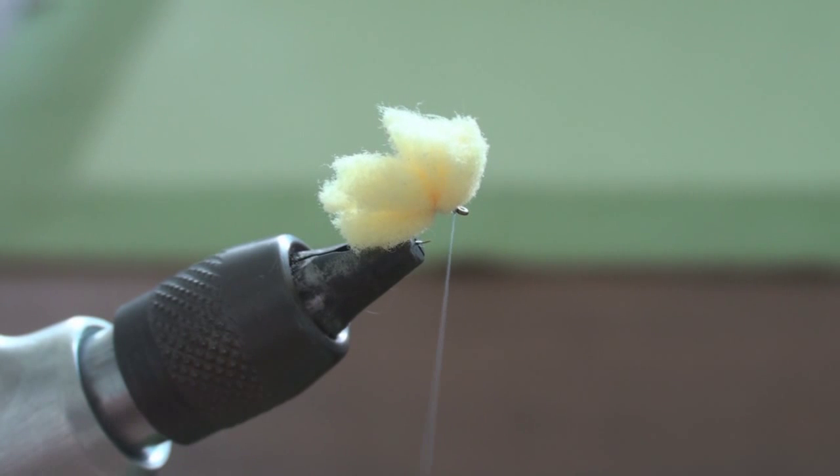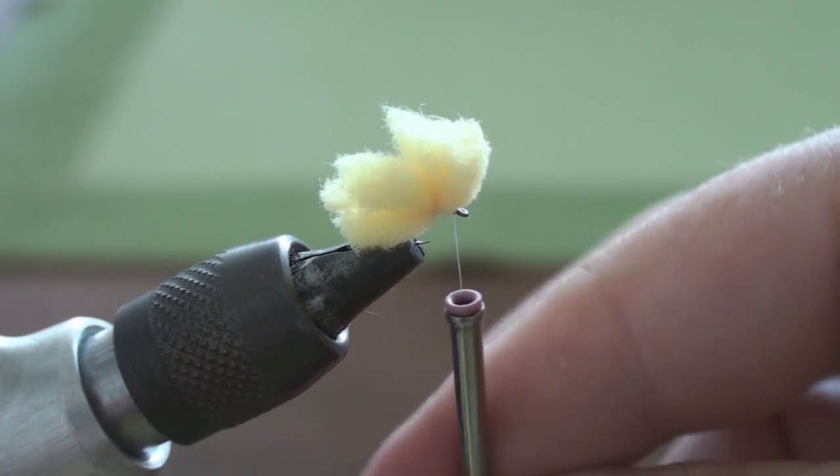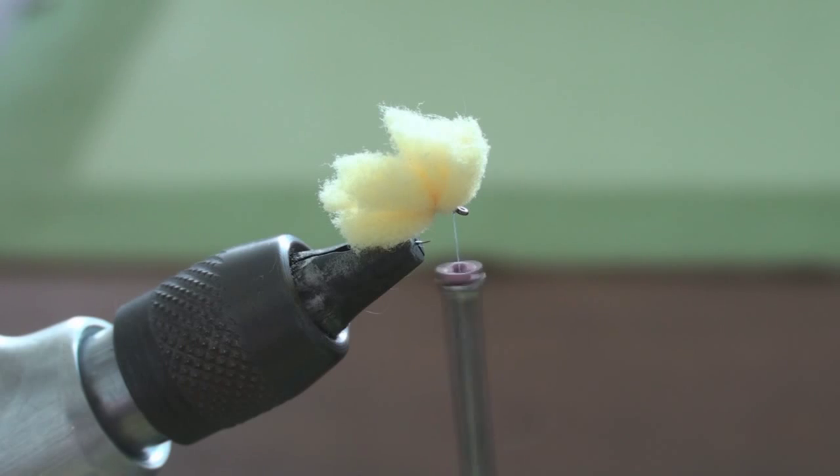You can tie a million of these an hour too. Sometimes I spin the thread to cut through the foam a little bit better. You can do that by hanging the thread like this and spinning it. It cuts through the foam a little better, but sometimes when I don't feel like wasting the time doing it, I just put it in.